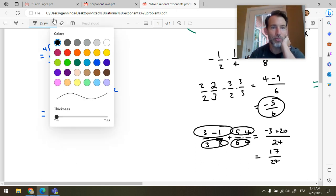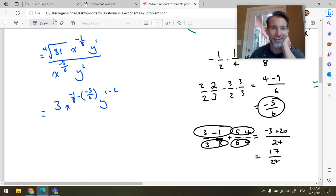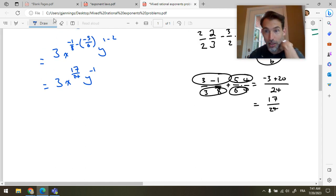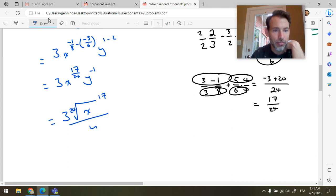Almost final answer. This is 3x to the 17 24ths. Y to the negative one. We were asked for positive exponents only and to use the mixed radical form. Don't mind if I do. 3, the 24th root of x to the 17 divided by y. That's y to the negative one. Just goes downstairs. Final answer.